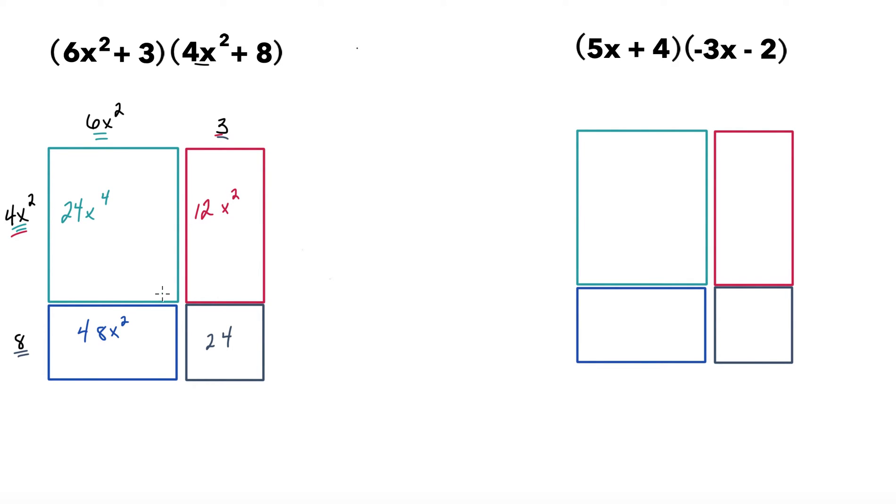I'm going to write down the greatest degree term, 24x⁴. The next one would be 48x². The next, plus 12x². And finally, finishing with the constant term, 24. Now we can combine like terms because these both have x² attached. So we're going to simplify that and make this 60x² plus 24. The first term will remain 24x⁴ plus this.